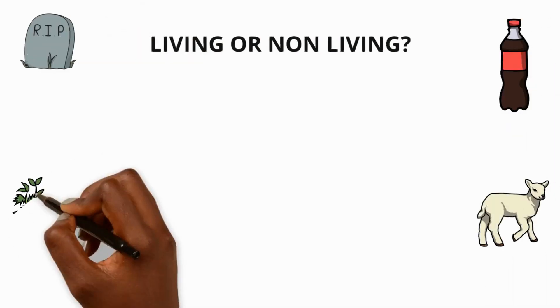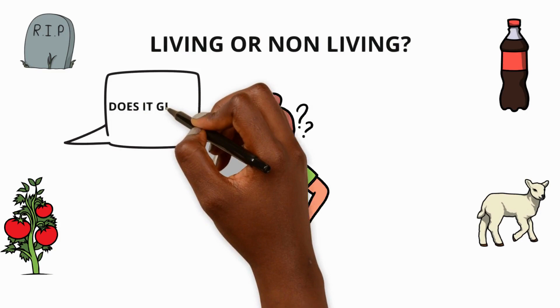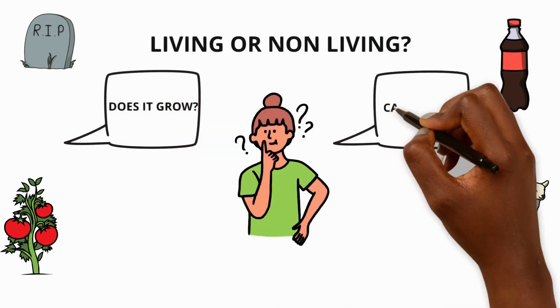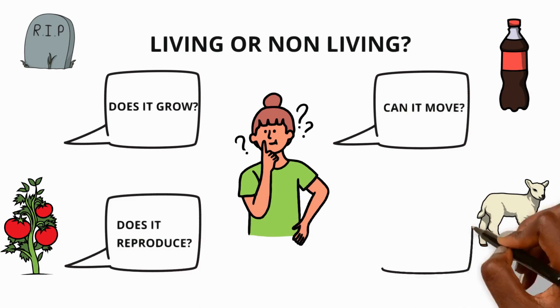We can decide this using questions about characteristics of living things such as does it grow? Can it move? Does it reproduce? Does it need nutrients?